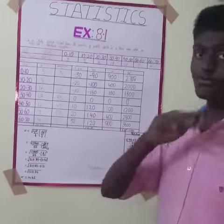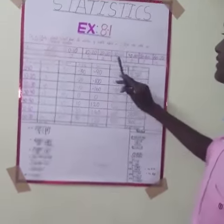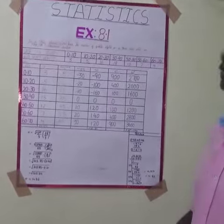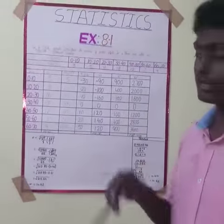The number of people affected in each age group is 3, 5, 16, 18, 12, 7, 4. So first, we have a tabular column.